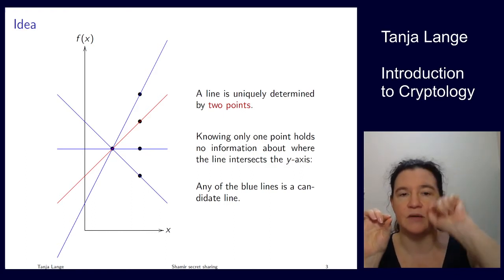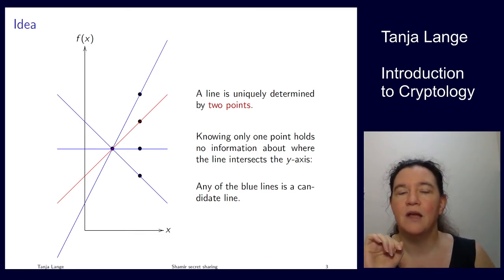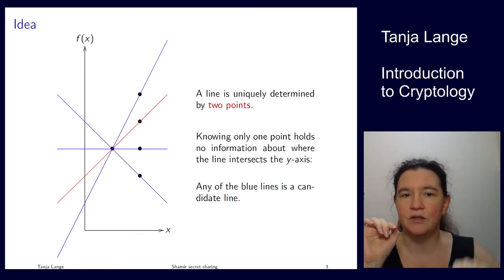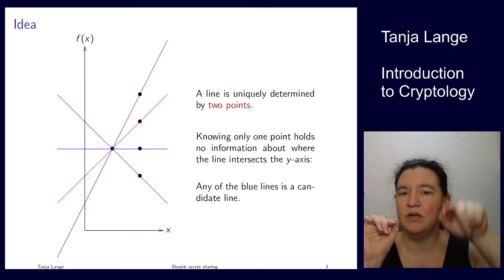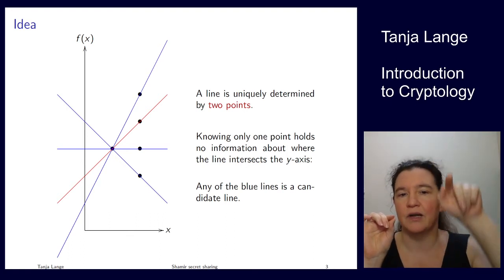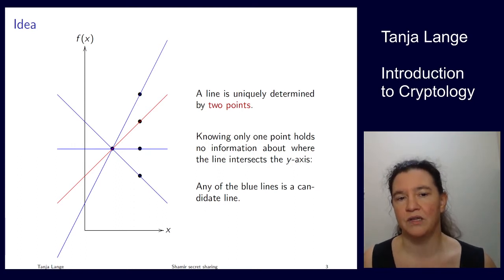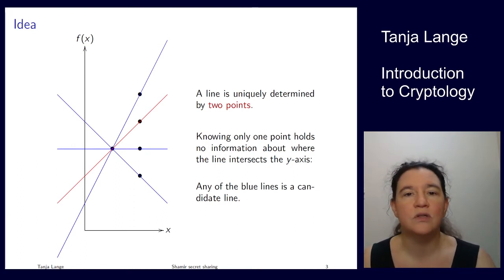If you only know one point, you cannot figure out anything about where the line through that point would intersect the y-axis. Any of the blue or red lines is a candidate. The correct line is uniquely determined only when you know the second point. Without it, you have no idea what the intersection looks like.